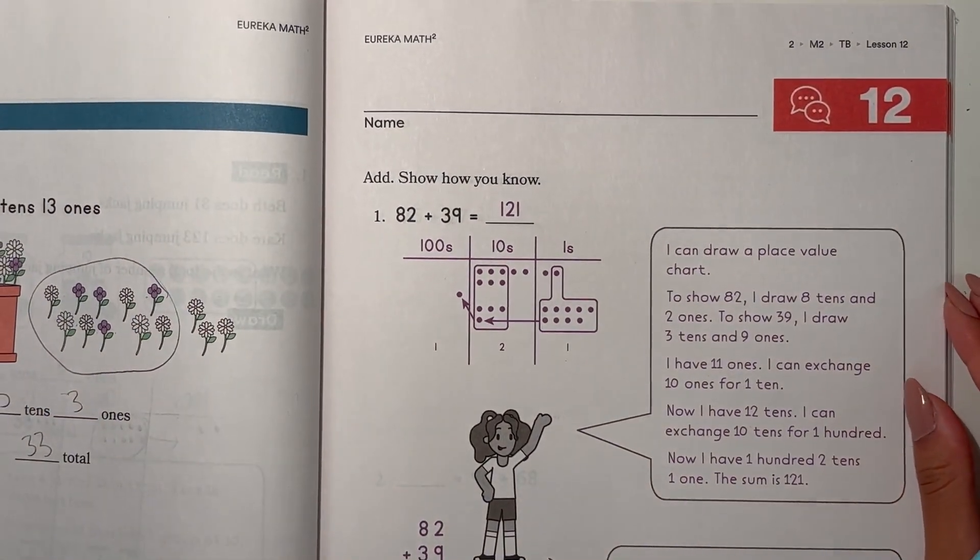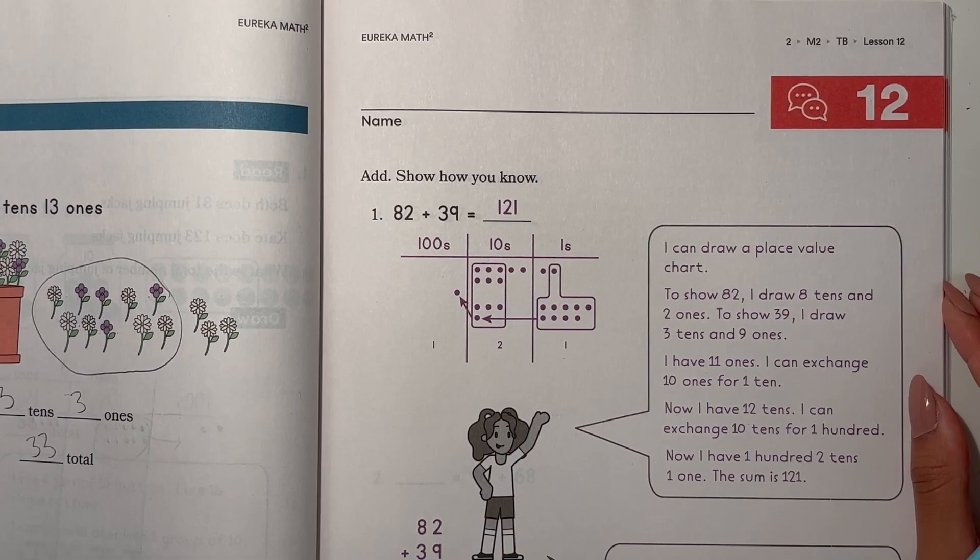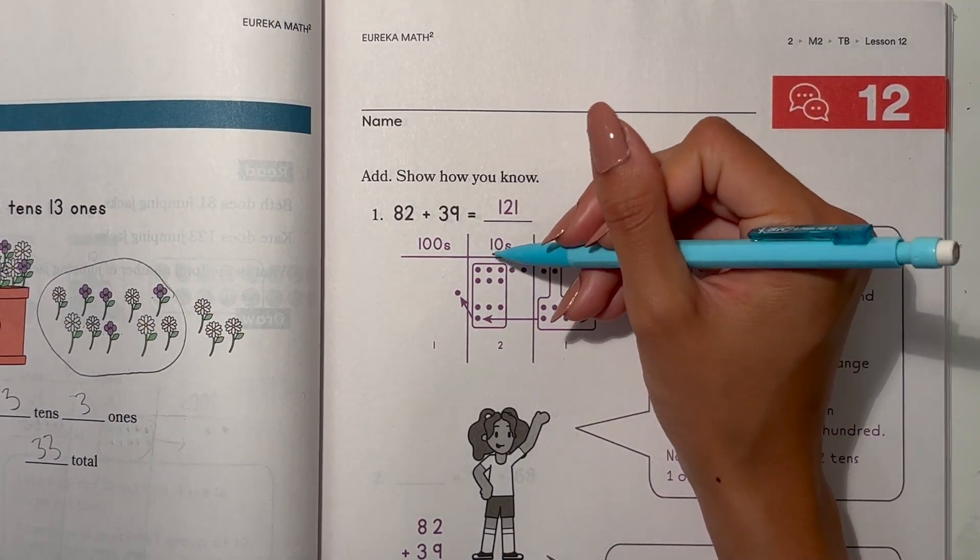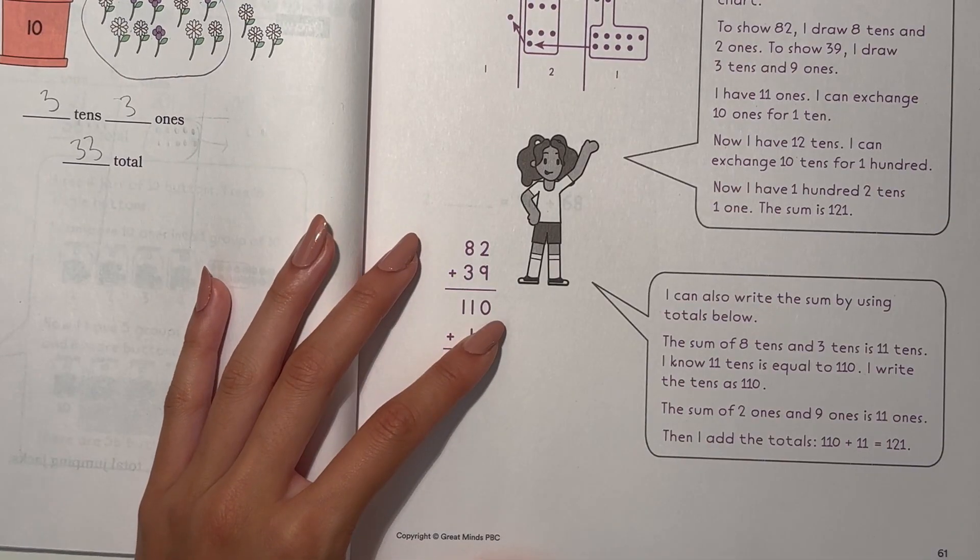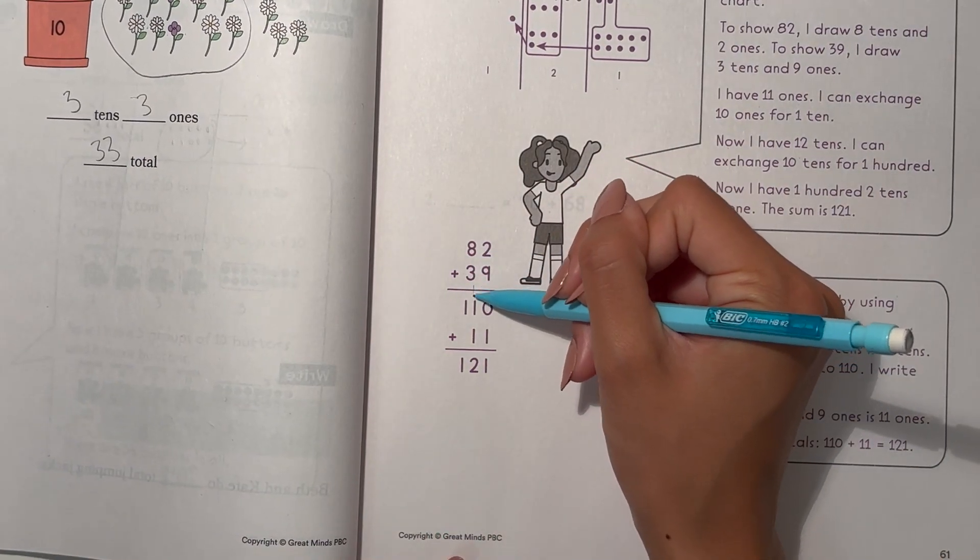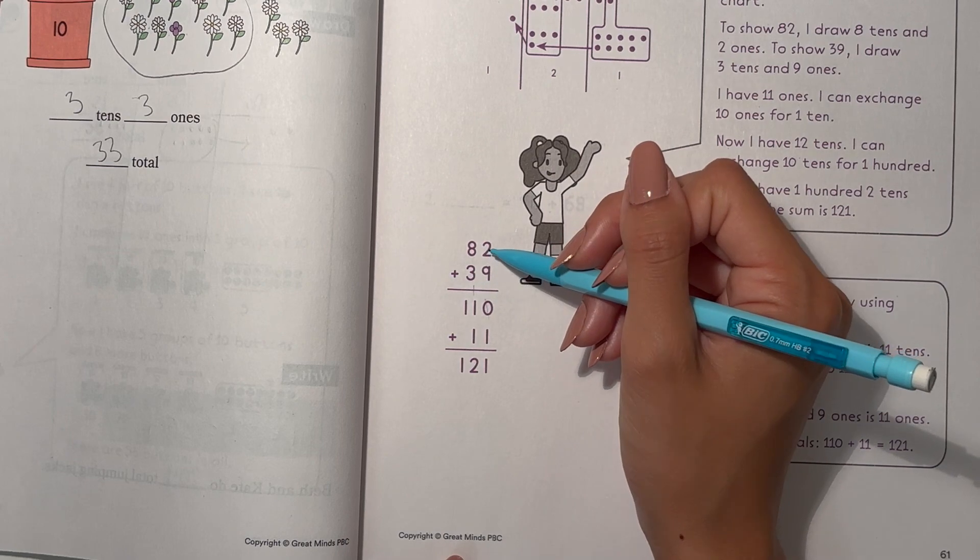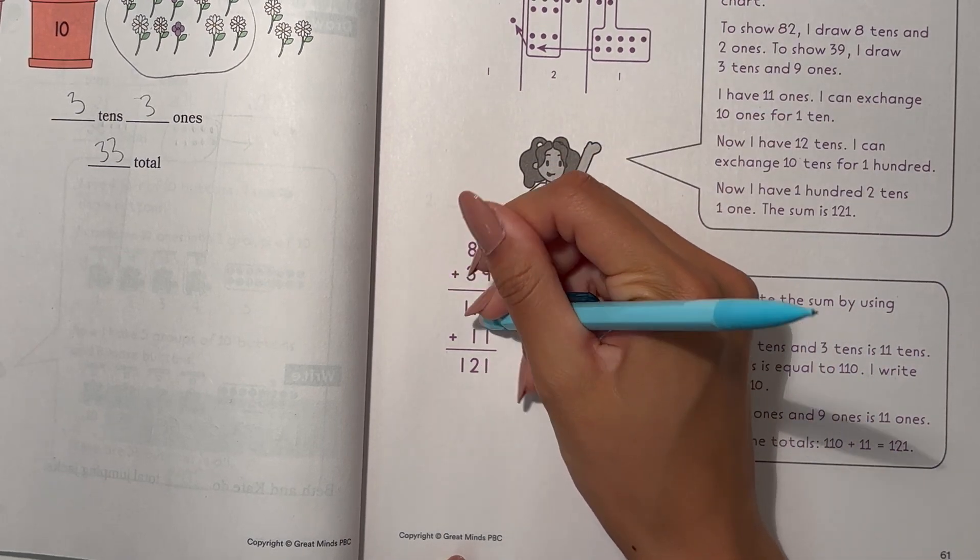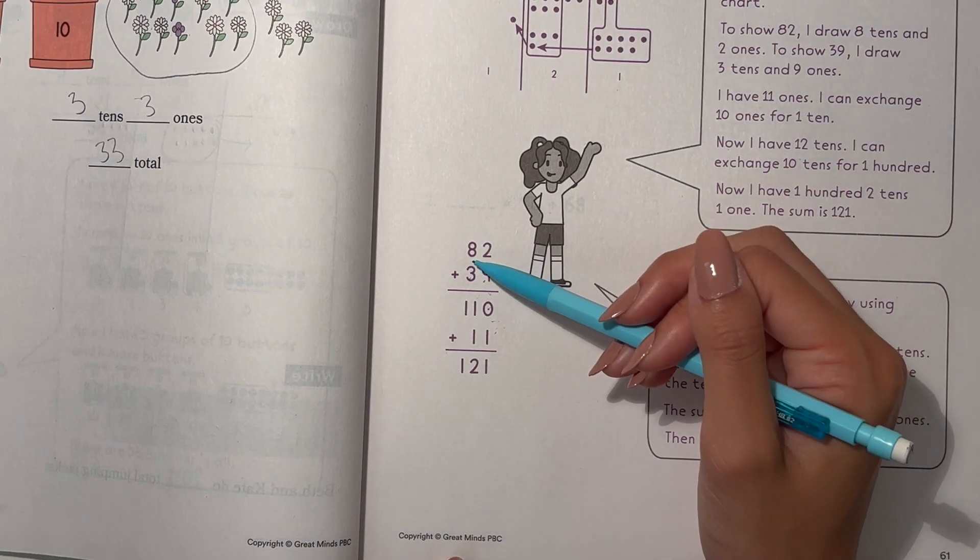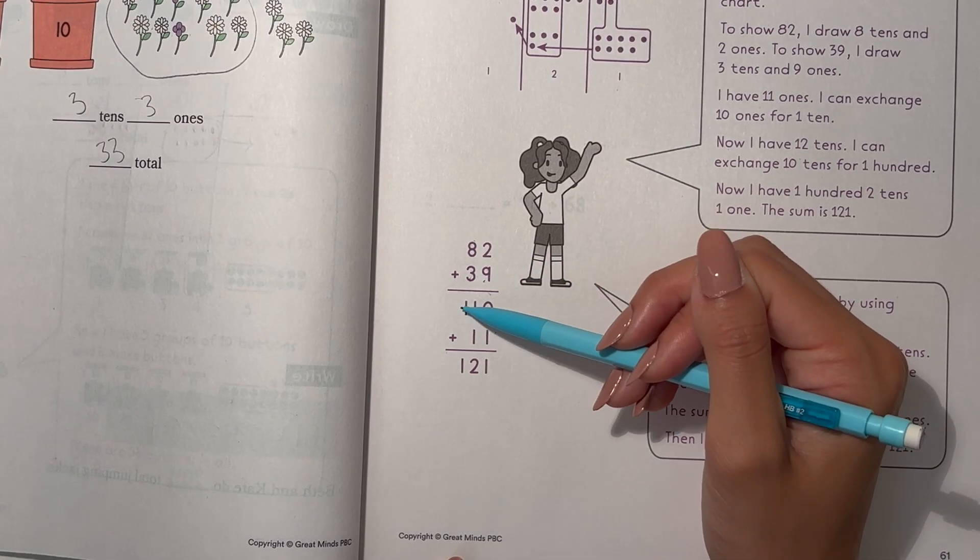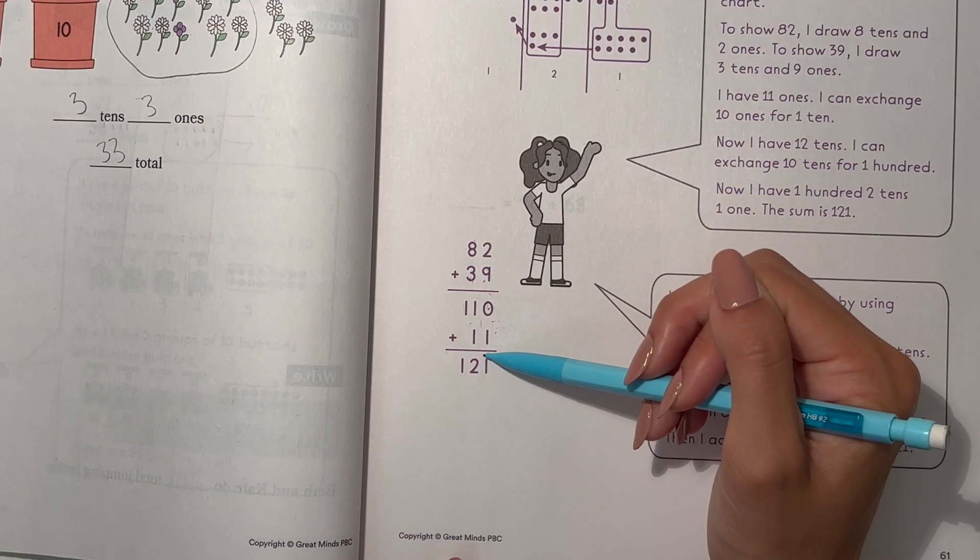Alright, and Lesson 12. Add, show how you know. Number 1. 82 plus 39 is 121. That's because they drew it out, regroup, and that's what they got. Now, we did it vertically in the standard algorithm. They're doing the sum of 8 tens and 3 tens. So first, they're adding the tens and the ones. 8 plus 3 is 11, but add a zero at the end because it's 80 plus 30. And 2 plus 9 is 11. So we add that and that's 121.